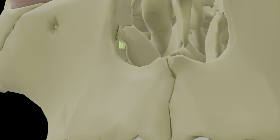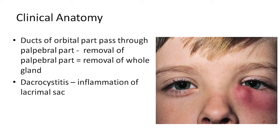Moving on to clinical anatomy: as mentioned, the ducts of the orbital part also pass through the palpebral part, even though the orbital part is larger. All ducts of the orbital part pass through the palpebral part. Therefore, to remove the lacrimal gland it is not necessary to dissect deeper and remove the entire gland — removal of the smaller palpebral part is more than enough, because doing so is in effect removing the entire gland. That is the surgical relevance.